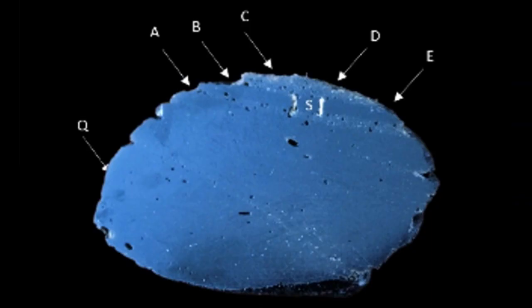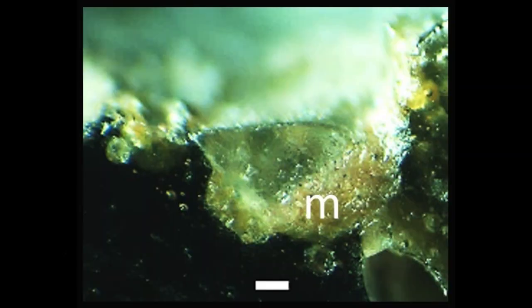Like chert rocks, Muong Nong tektites were also bombarded, leaving impactor grains in their craters. This could have brought small amounts of high-pressure polymorphs, like stishovite and reidite, to the Muong Nong tektites.